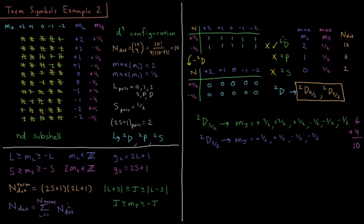When we subtract the 10 determinants needed for the doublet D term symbol, we're left with a matrix full of zeros. There are no remaining determinants to assign to doublet P or doublet S, so those are not valid term symbols. The only term symbol is doublet D.